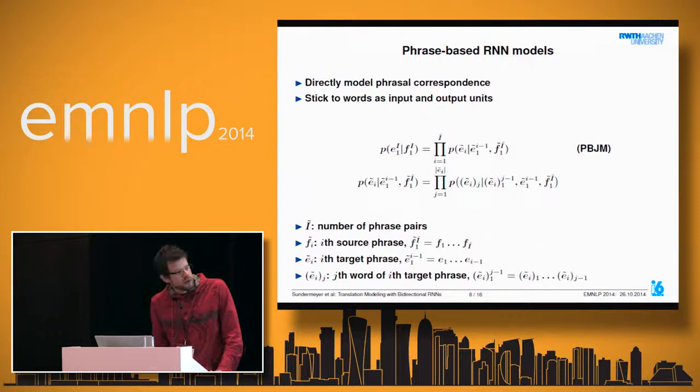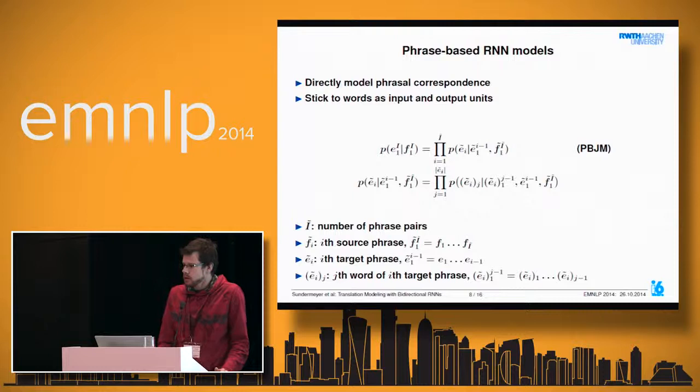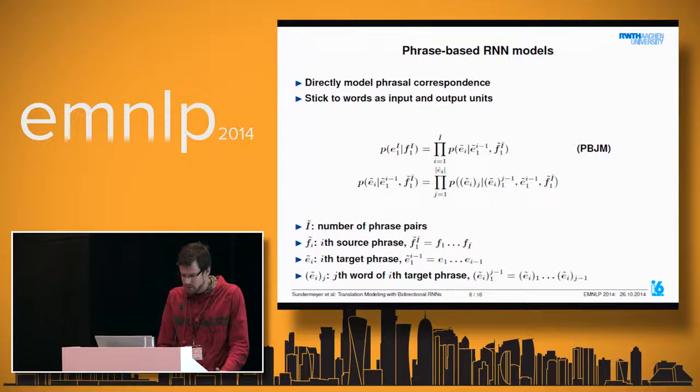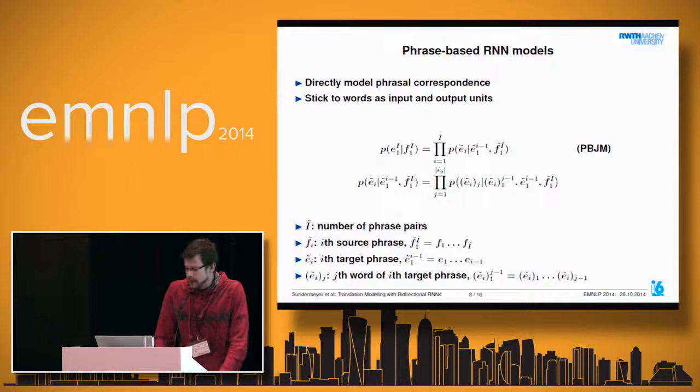Now let's look at the phrase-based RNN models. The idea is to directly model the phrasal correspondence given by the phrase-based decoder, which avoids artificially imposing additional alignment. We still use words as input and output units rather than a phrase vocabulary, in order to avoid data sparsity issues.